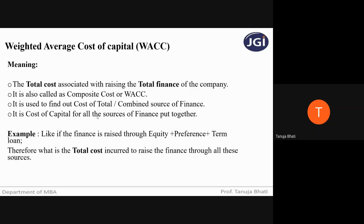Let us take an example. If the finance is raised through equity plus preference plus term loan, what is the total cost incurred to raise the finance through all the sources? We are not going to calculate individually. We are going to calculate in totality — taking the total capital raised through these sources and finding out the total cost based on average and weights.